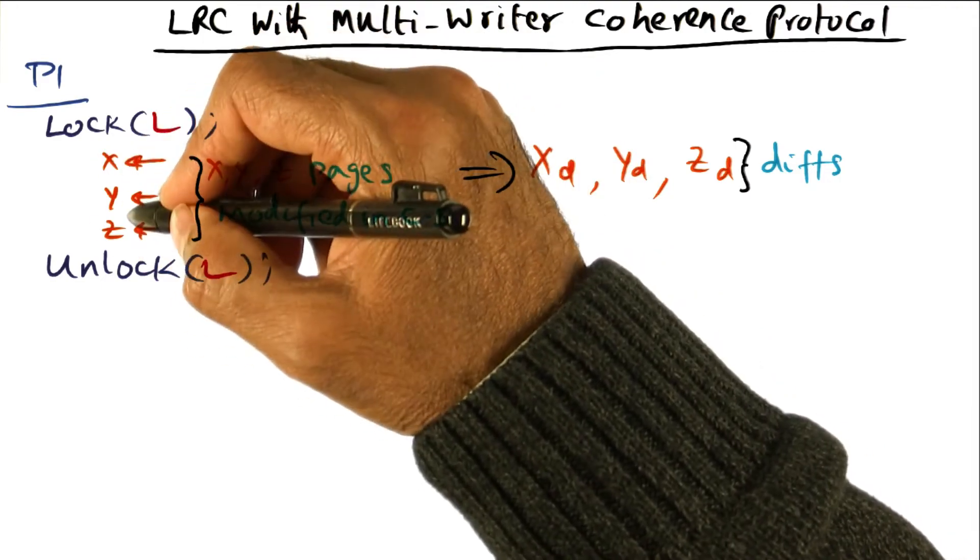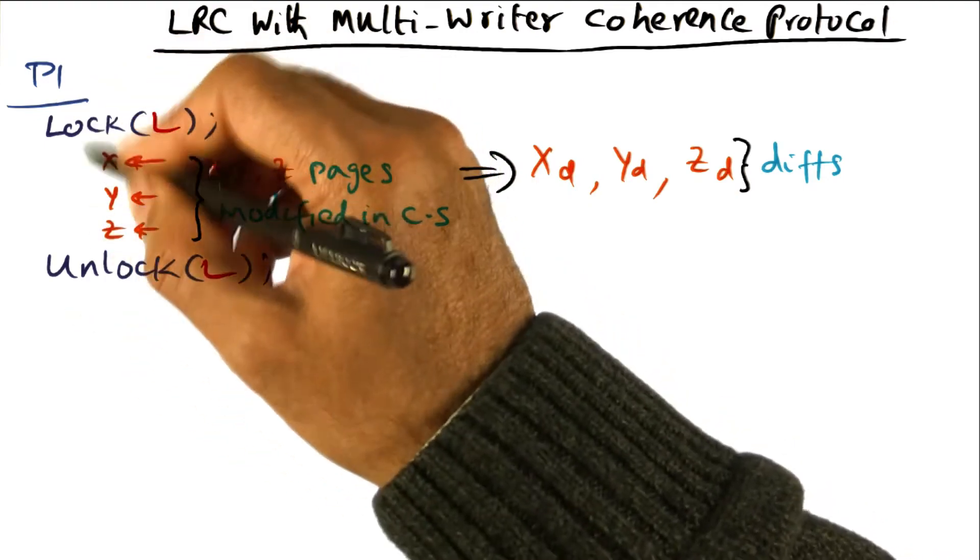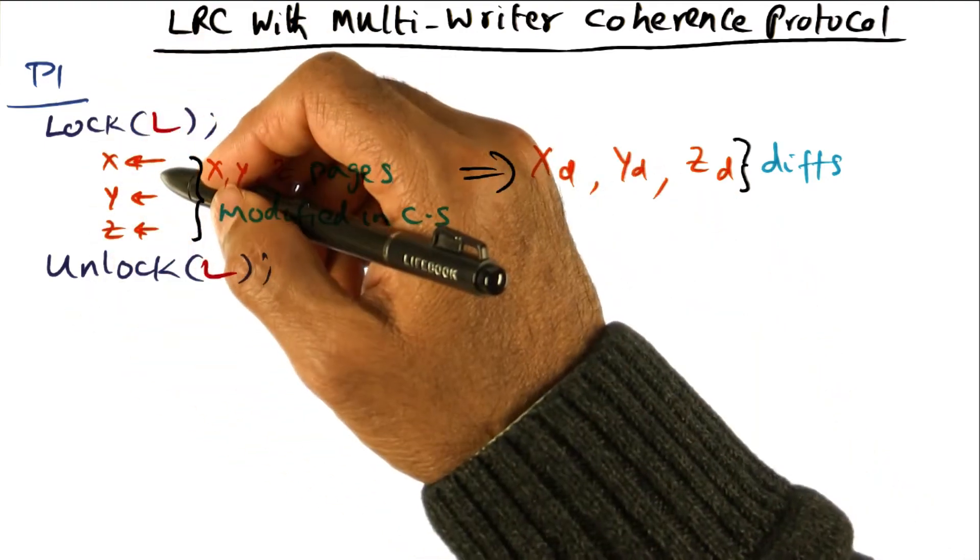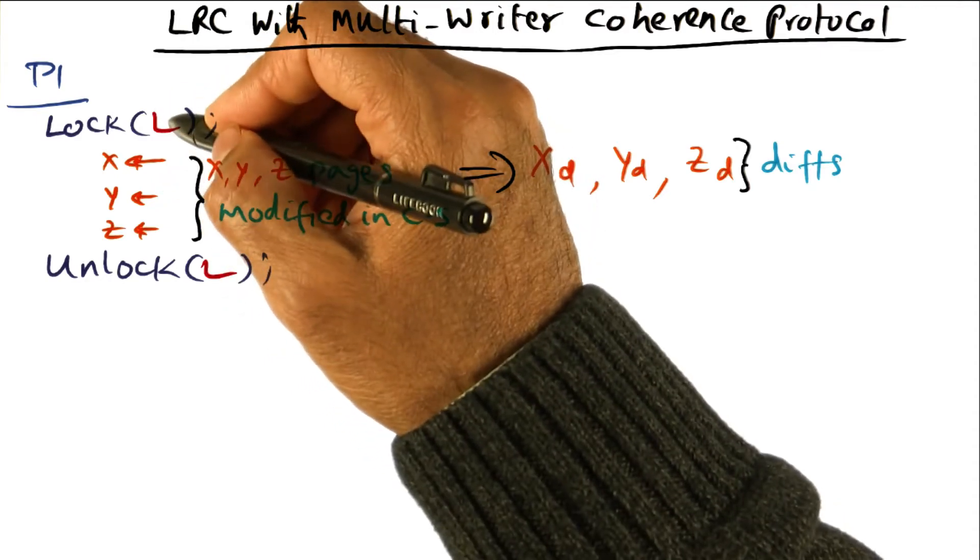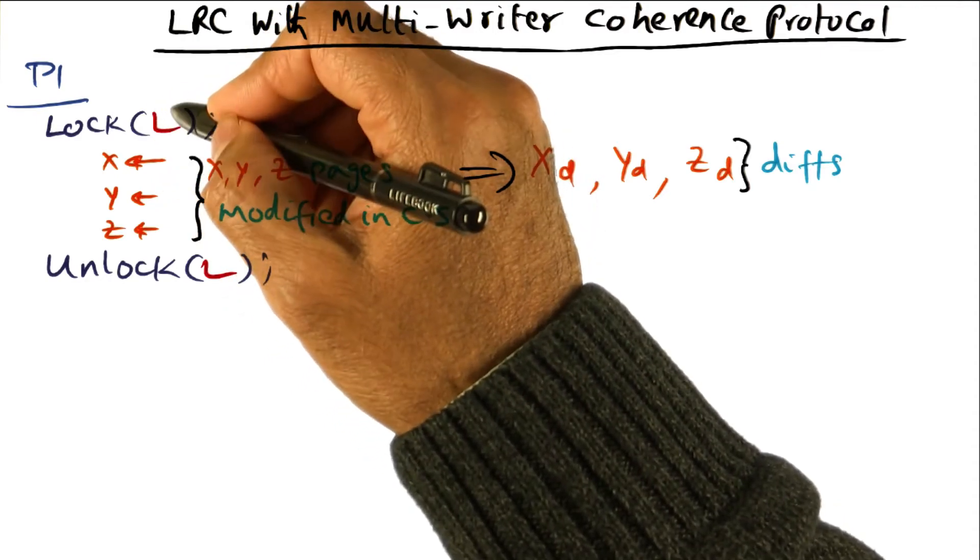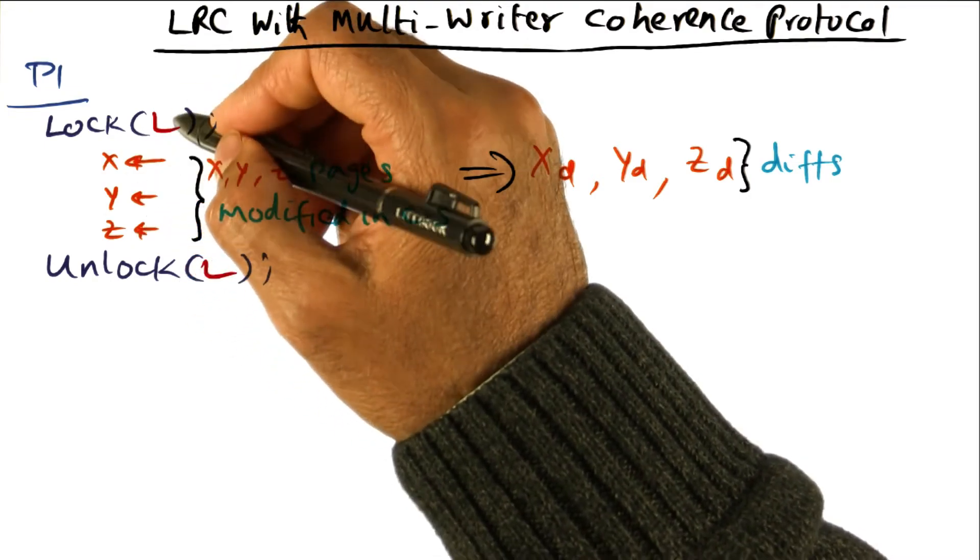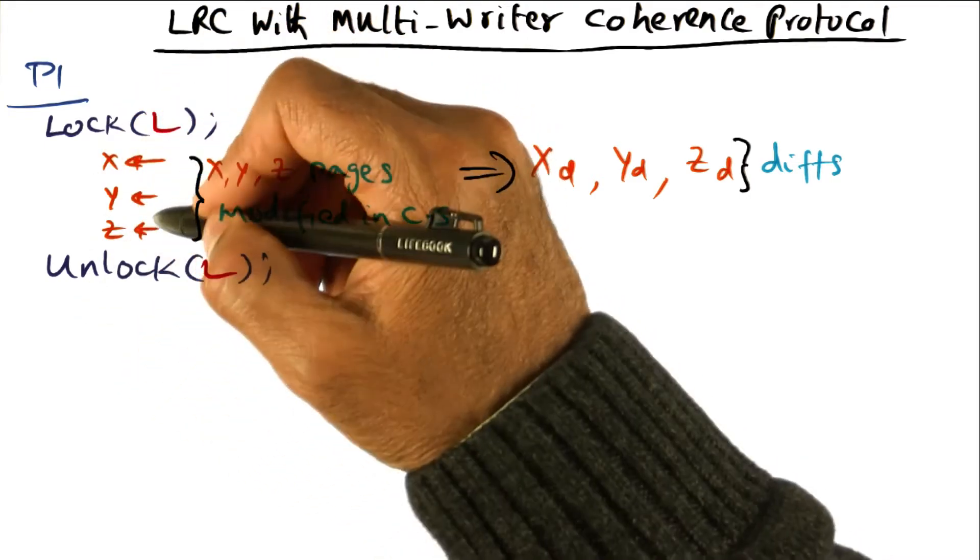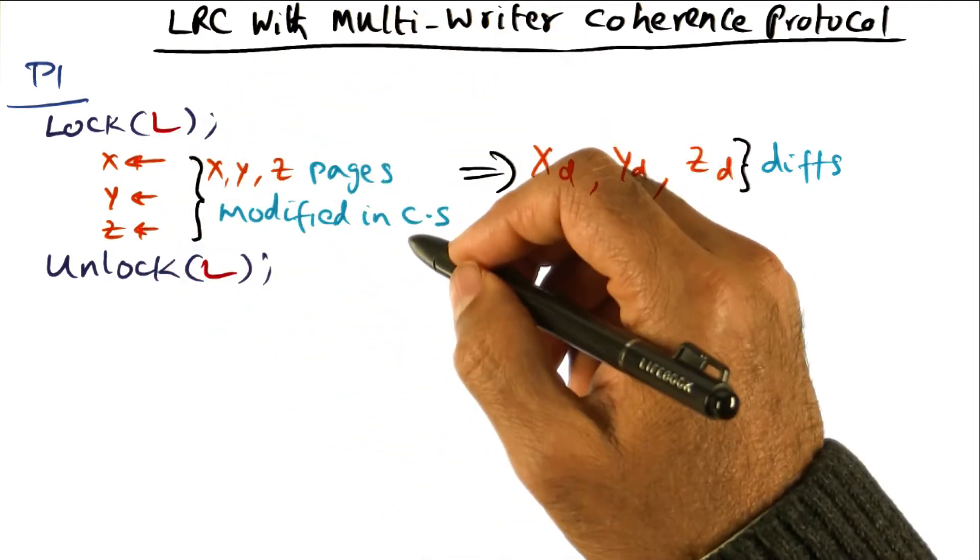Those are the pages that are being modified within this critical section when processor P1 executes this piece of code. Now, the operating system has no knowledge of the association between the lock L and the pages that are being modified. All it knows is that within the critical section, these are the pages that were modified.